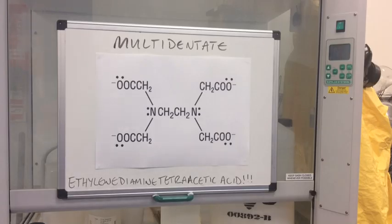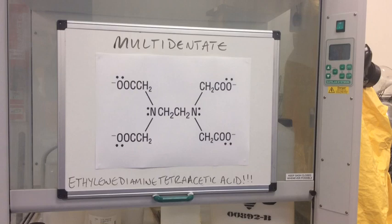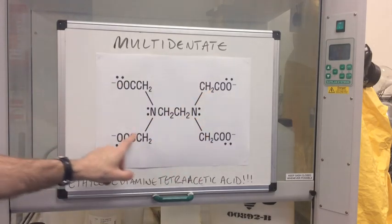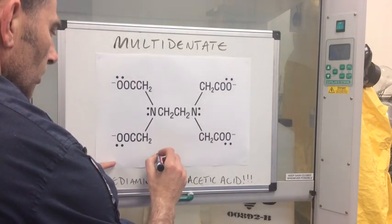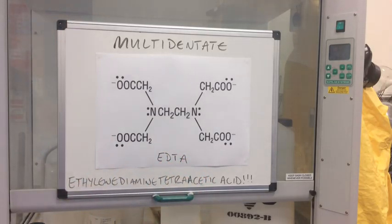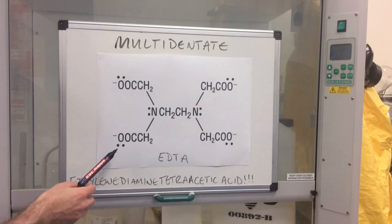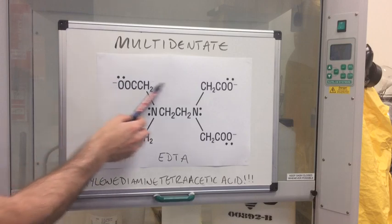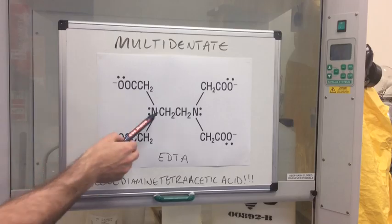The final type of ligand is the multidentate ligand, and our example is ethylenediamine tetraacetic acid, or EDTA. It consists of the ethylenediamine part with four ethanoic acid groups surrounding it — tetra for four, acetic being the old name for ethanoic acid. EDTA is actually a hexadentate ligand: there are six lone pairs available, one on each of the four O⁻ groups and one on each of the two nitrogens, allowing six dative covalent bonds to form.